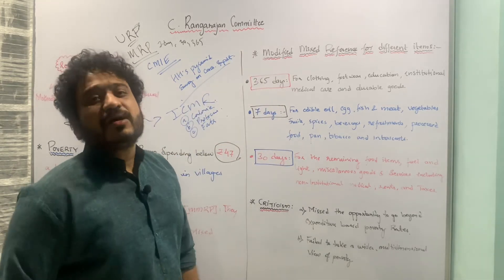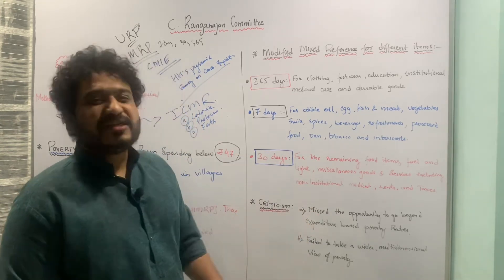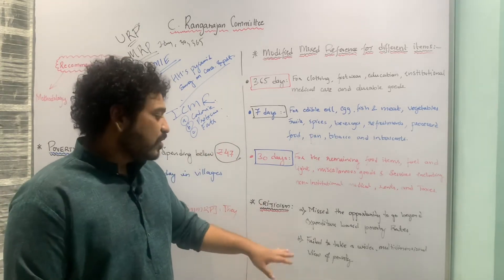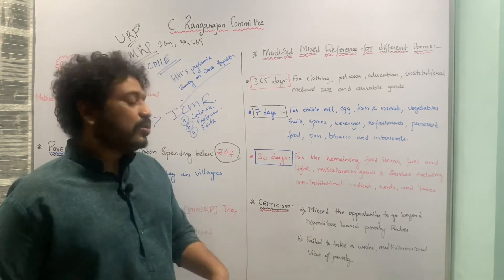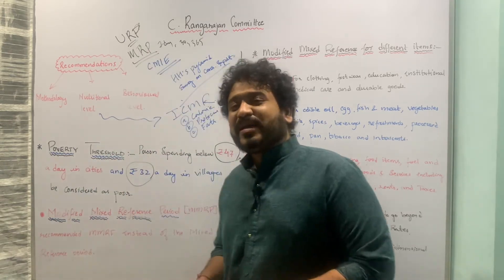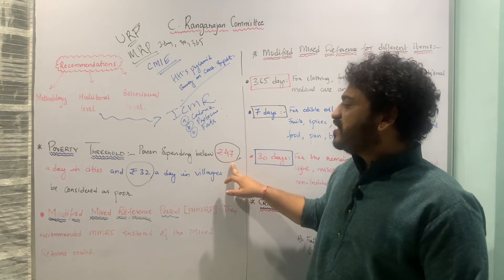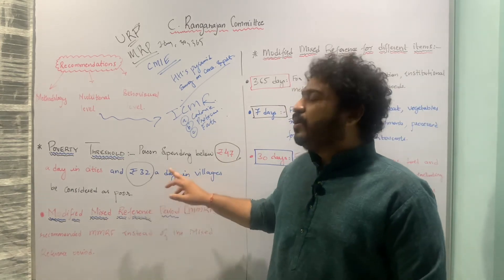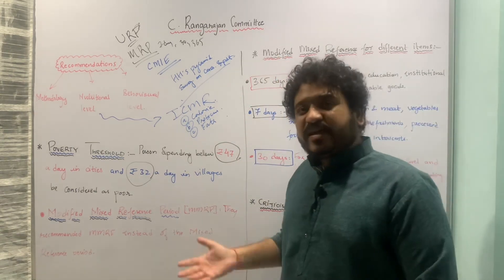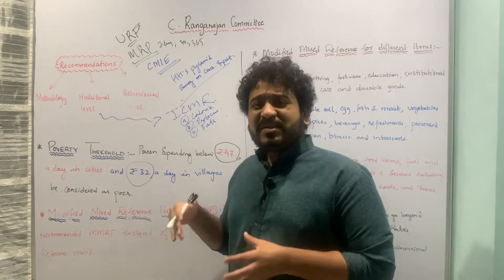Before we end the discussion of the Rangarajan Committee, let us note the points of criticism. First, they missed the opportunity to go beyond consumption expenditure-based poverty rates — they again incorporated a consumption-based approach. Second, they failed to take a wider multi-dimensional view towards poverty. These are the two key failures of this committee, whose poverty threshold is pegged at below rupees 47 in a city and below rupees 32 in a village. I hope all these committees are clear — please stay tuned, thank you.